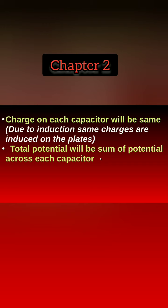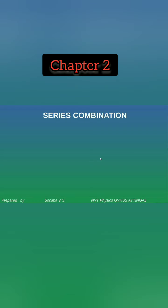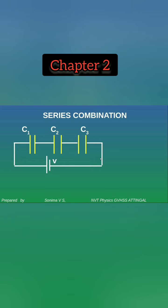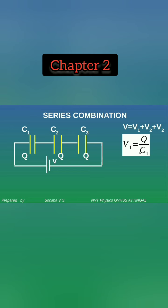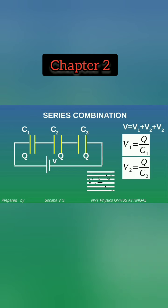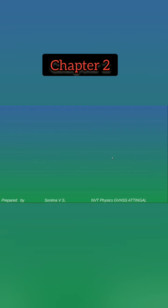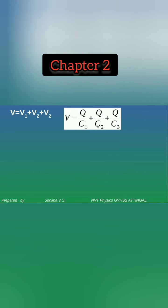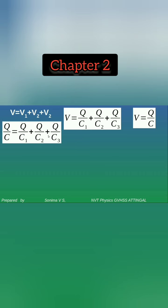Three capacitors C1, C2, and C3 are connected in series across a potential difference V. The potential difference is the sum of the potential on each capacitor. That is, total potential V is equal to V1 plus V2 plus V3. And V1 is equal to Q by C1, V2 is equal to Q by C2, and V3 is equal to Q by C3. So total potential V can be written as V equals Q by C1 plus Q by C2 plus Q by C3.